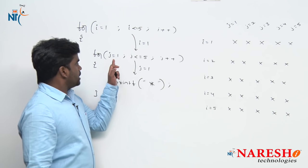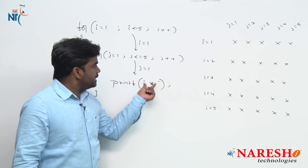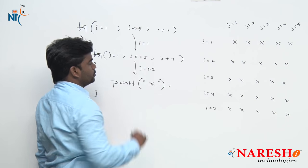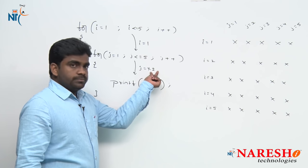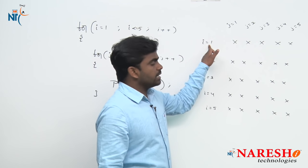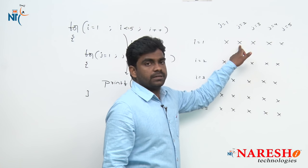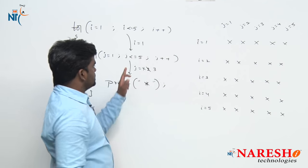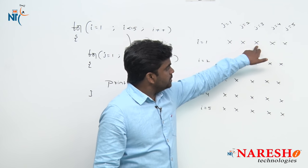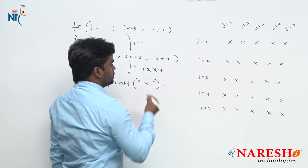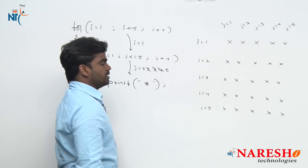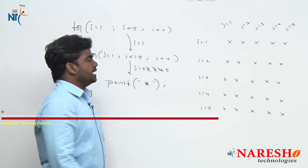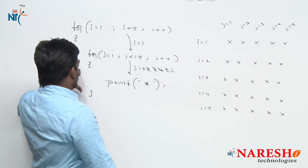The inner loop continues: after printing a star, j increments to 2; 2 is less than or equals to 5, condition true — second star prints. Then j becomes 3, 4, 5 — third, fourth, fifth star print. Whenever j becomes 6, the condition 6 is less than or equals to 5 fails. Inner loop execution is terminated.